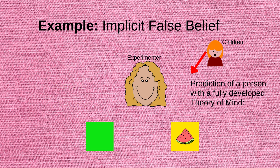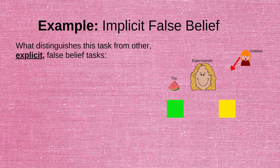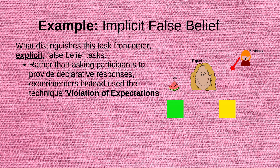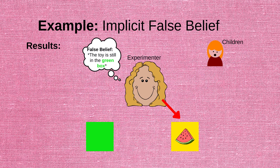As adults with a fully developed theory of mind, we would predict that a person who doesn't know that their toy has changed location would look for the toy in the same location where they placed it — the green box. This is because a person unaware that their toy has been moved would have the false belief that it is still where they left it. What distinguishes this experiment from explicit false belief tasks is that rather than asking children to provide declarative answers, the experimenters used the technique known as violation of expectation. This technique, often used to study infant cognition, is based on the idea that infants will look at an object for a longer duration when they are surprised by an event that violates their expectations. The results showed that when the experimenter reached for the toy in the yellow box, children looked at this box for a significantly longer period of time compared to when the experimenter looked in the green box.